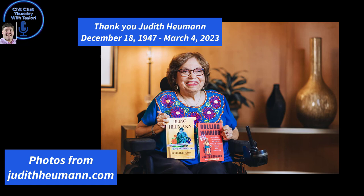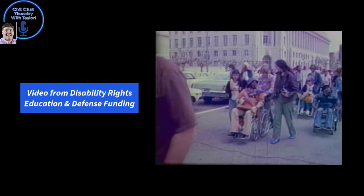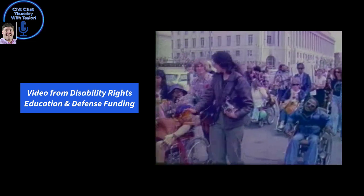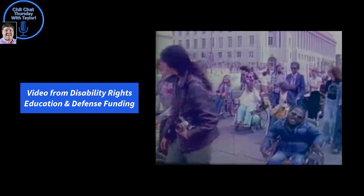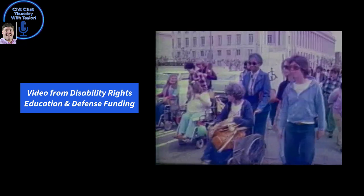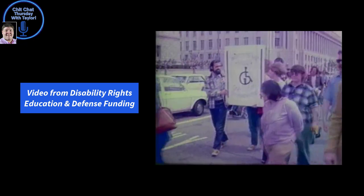American activist Judith Heumann is considered the mother of disability rights by many in the disability community. She helped push for the passing of Section 504 alongside many other amazing disability heroes. They participated in federal building sit-ins and got national attention through marches and rallies. Through all this advocacy work, Section 504 was finally enforced.